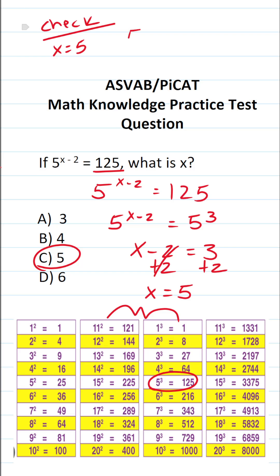Our original equation was 5 to the x minus 2 equals 125. We know x equals 5. So let's plug it in. This becomes 5 to the 5 minus 2 equals 125. This says 5 to the third power equals 125. As I showed you below, 5 to the third power is 125. Does 125 equal 125? Since this is a true statement, I'm confident that C is correct.